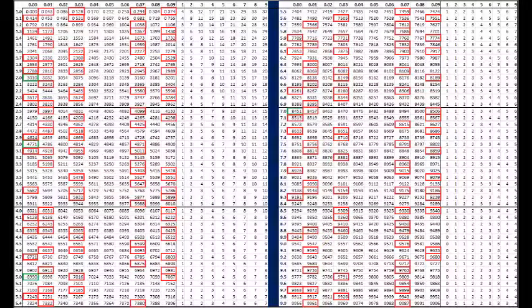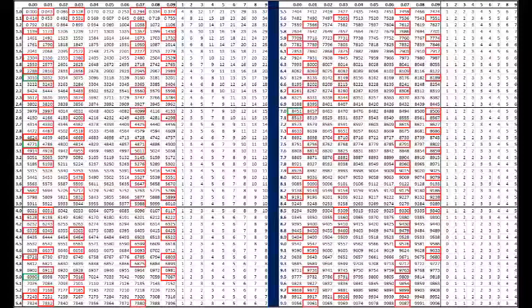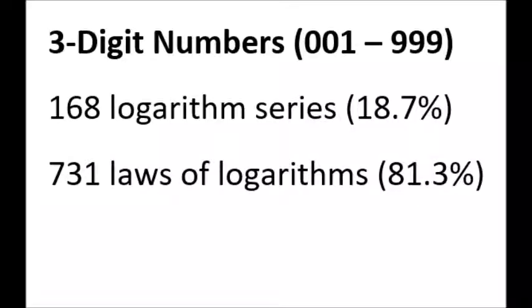At a glance, these are the numbers on the table for which we must use the series expansion. The rest can be obtained by simple addition and subtraction using laws of logarithms. In summary, only about 19 percent of the logarithms of three digit numbers must be obtained using the series expansion. The remaining 81 percent can be computed much more simply.